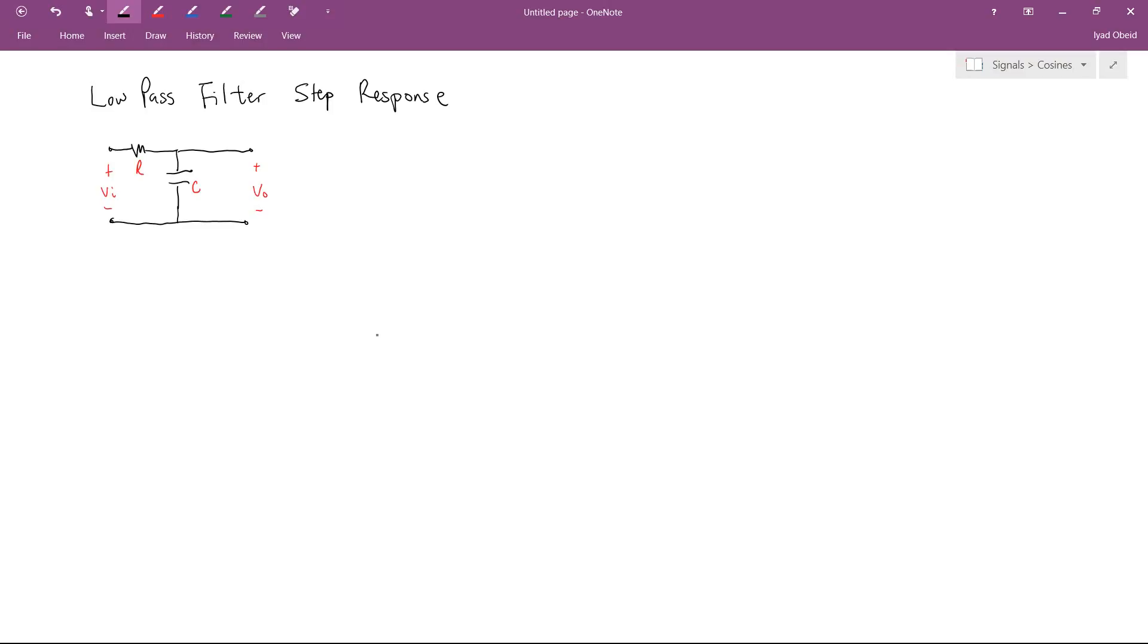So you probably learned in your circuits course what an RC filter does, it's a low-pass filter. In this video, we're going to think about this from a signals and systems perspective. Generally speaking, the easiest way to analyze, or at least the most straightforward way to analyze any circuit, is to write its differential equation.